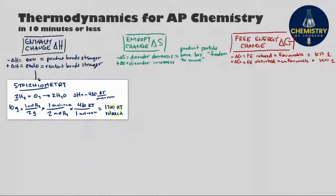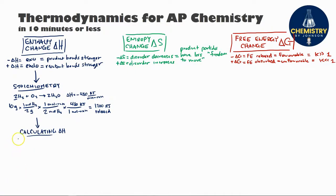In this case, we would get 1,200 kilojoules released. And lastly, there's lots of different ways you can calculate delta H values.